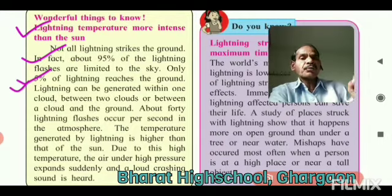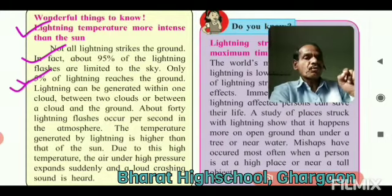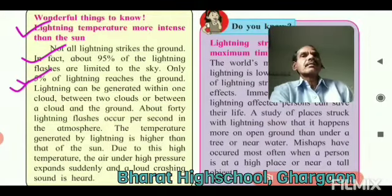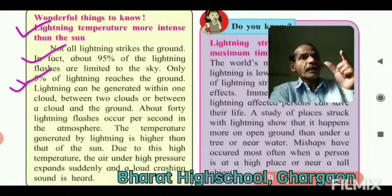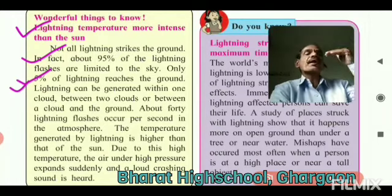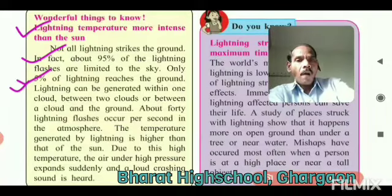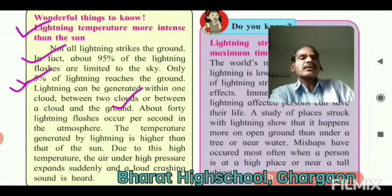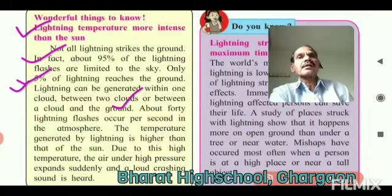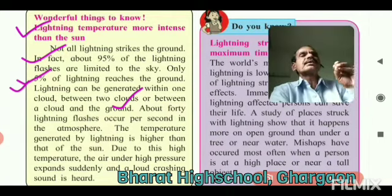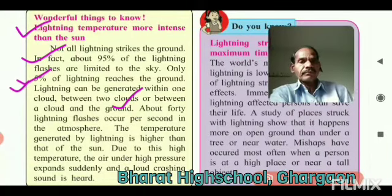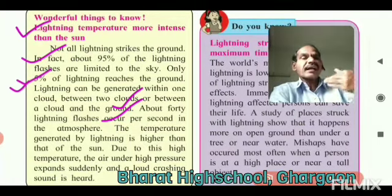Lightning can be generated within one cloud, between two clouds, or between a cloud and the ground. The temperature generated by lightning is higher than that of the sun.